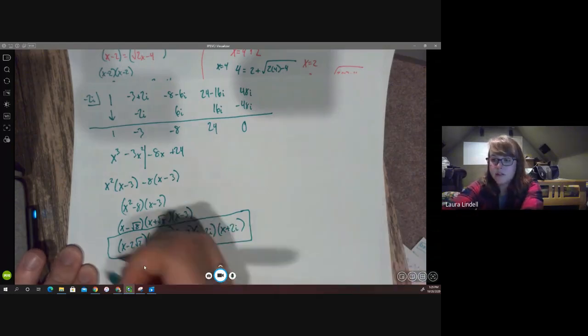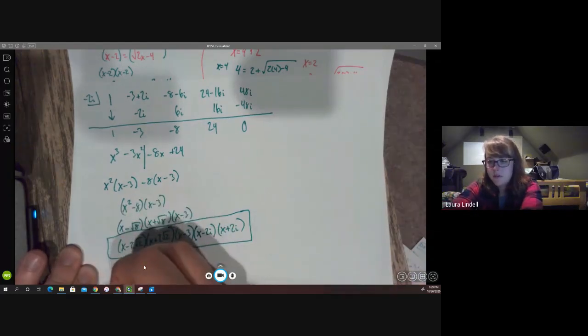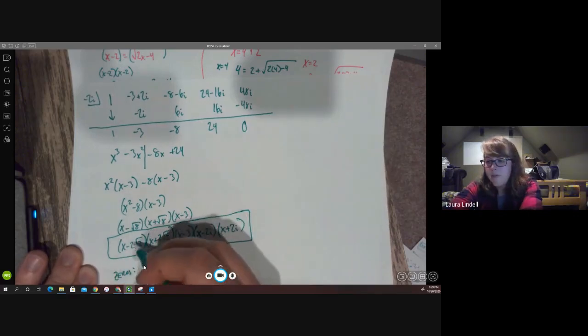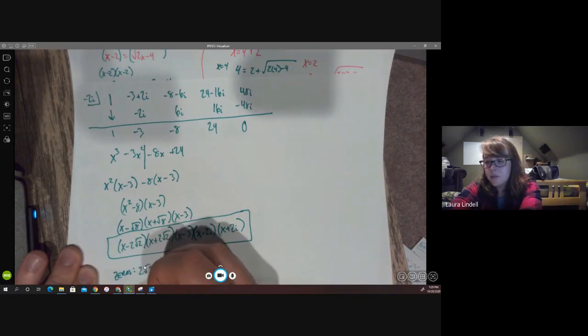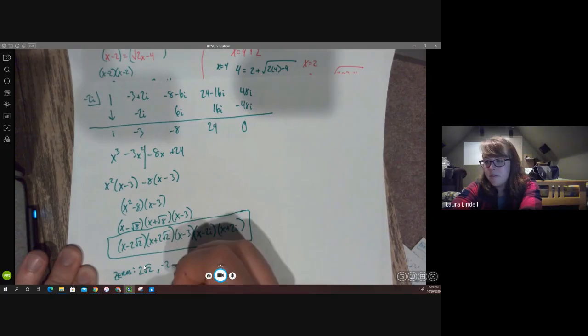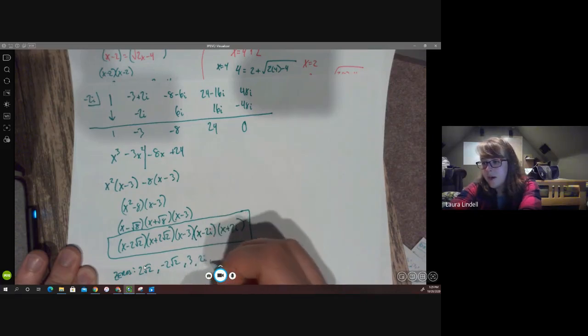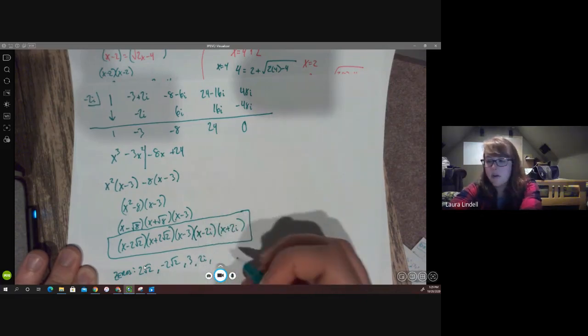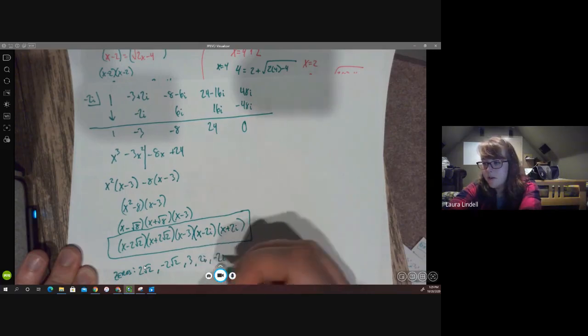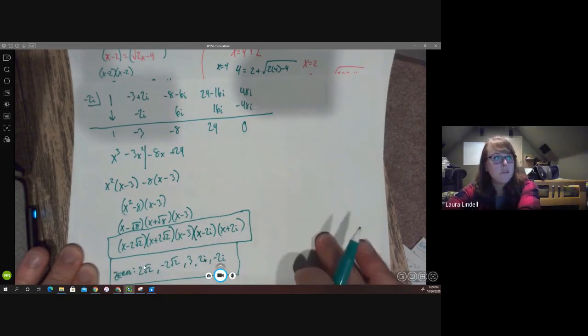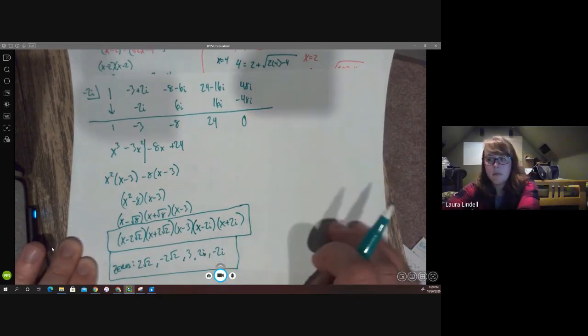Then we want to also list our zeros. And that's as simple as going, okay, we have, if I set this equal to 0, we would get 2 root 2. If I set this equal to 0, we would get negative 2 root 2. If I set this equal to 0, I would get 3. If I set this equal to 0, I would get 2i. If I set this equal to 0, I would get negative 2i. So these are the two parts to my answer from number 3.